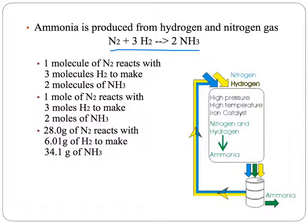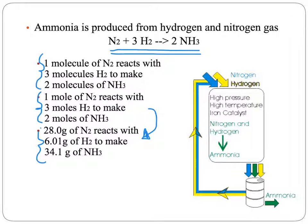In this balanced chemical equation, we can read that as one molecule of nitrogen gas reacting with three molecules of hydrogen gas to make two molecules of ammonia. Or we could read it as one mole of nitrogen gas reacting with three moles of hydrogen gas to make two moles of ammonia. Or, converting moles into grams, 28.0 grams of nitrogen reacts with 6.01 grams of hydrogen to make 34.1 grams of ammonia. All three of these statements are true, based on the balanced chemical equation.